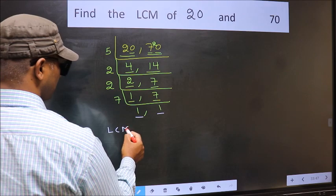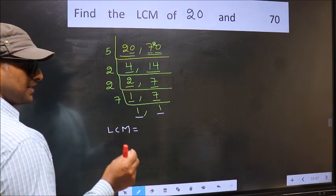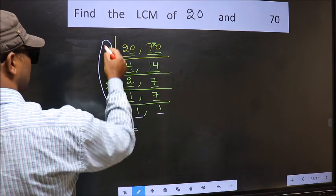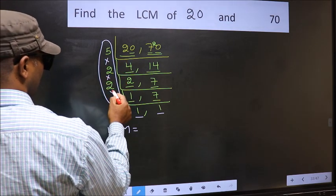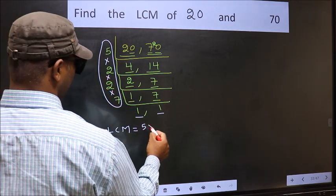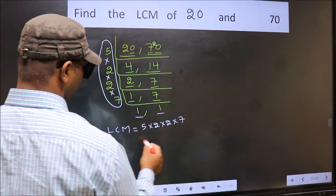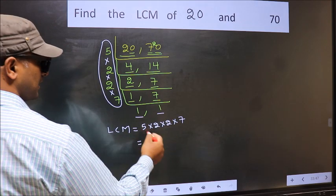So our LCM is the product of these numbers, that is 5 into 2 into 2 into 7. So let us multiply these numbers.